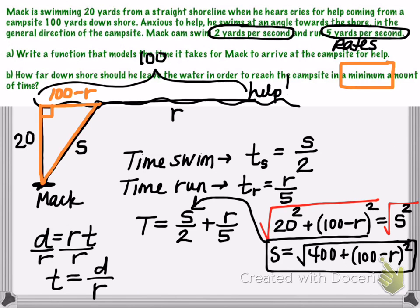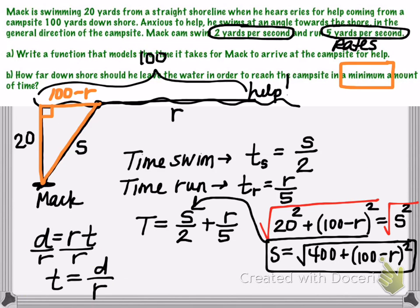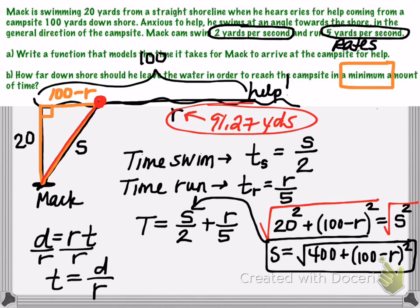The question was asking, part B, how far down shore he should leave the water. So really we'll be utilizing my R value here of 91.27 to answer the question. Going back to my diagram, the distance that he's going to run is 91.27 yards. So we would want Mac to swim to shore and get out of the water at a point that's 91.27 yards from the person who's needing help.